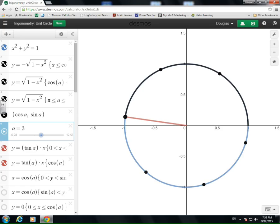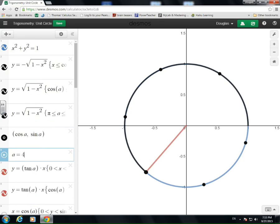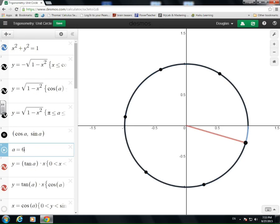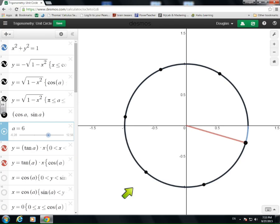When we get to three radians, we're right here, which is almost halfway around. Four radians sends us now into the third quadrant, and by the time we get to six radians, we've almost gone completely around the circle.